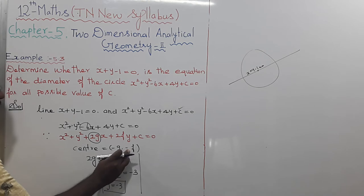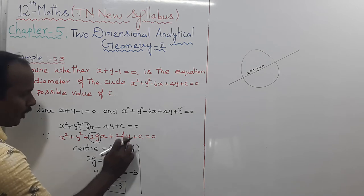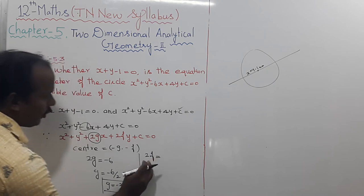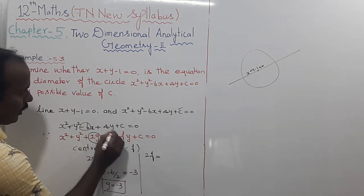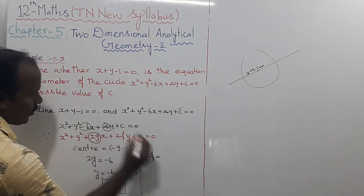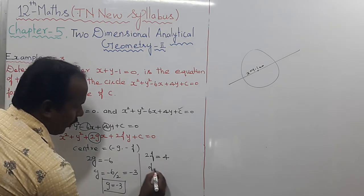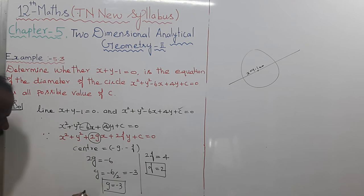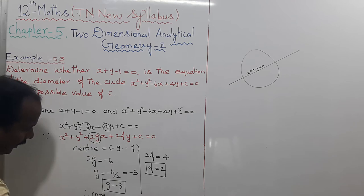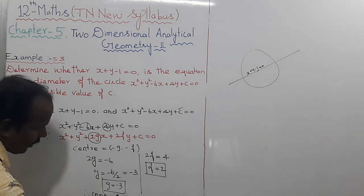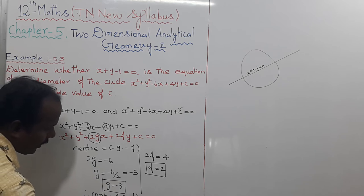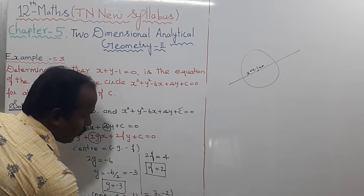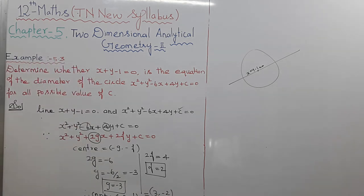Next, to find f, we look at the coefficient of y. So 2f equals 4, therefore f equals 2. So the center is minus g comma minus f, which equals 3 comma minus 2.